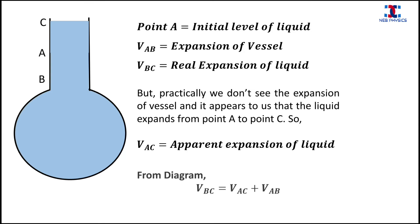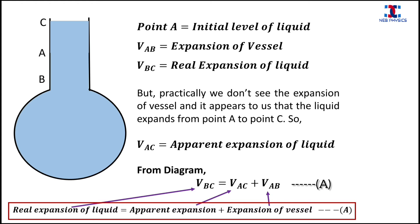Now from the diagram, we can write V_BC is equal to V_AC plus V_AB. Let this be equation A. This means that the real expansion of liquid is equal to the apparent expansion of liquid plus the expansion of vessel.